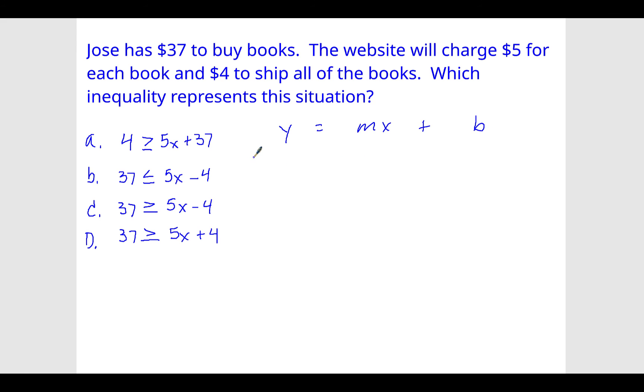But it's often the total or the budget, however you want to think of it, is going to be greater than or equal to the rate times some variable amount plus a fixed amount. So let's go back and read the question and plug the numbers in. Jose has $37 to buy books. The website will charge $5 for each book. So that word each means rate. So that goes here. Five goes here.